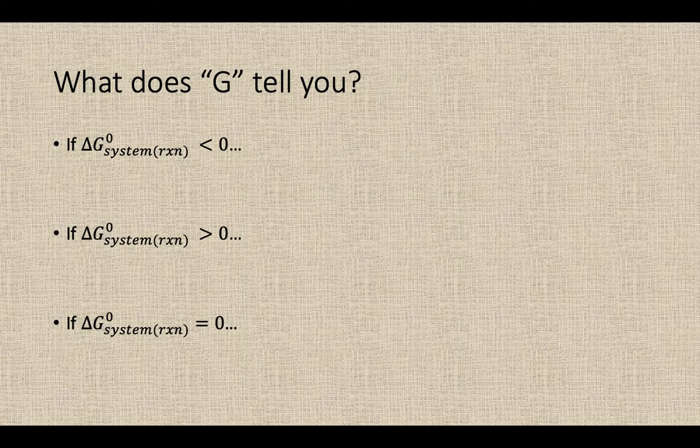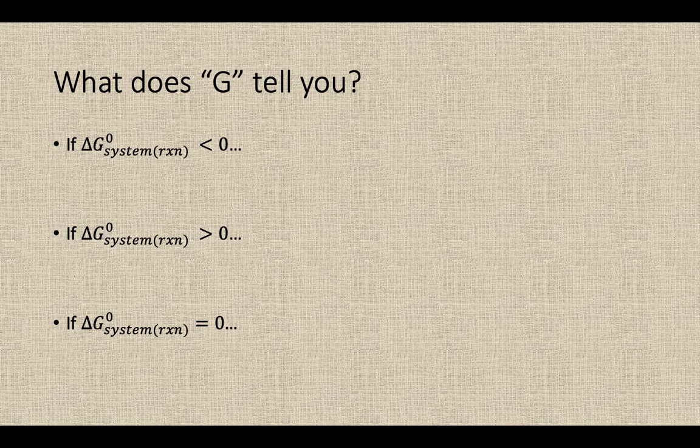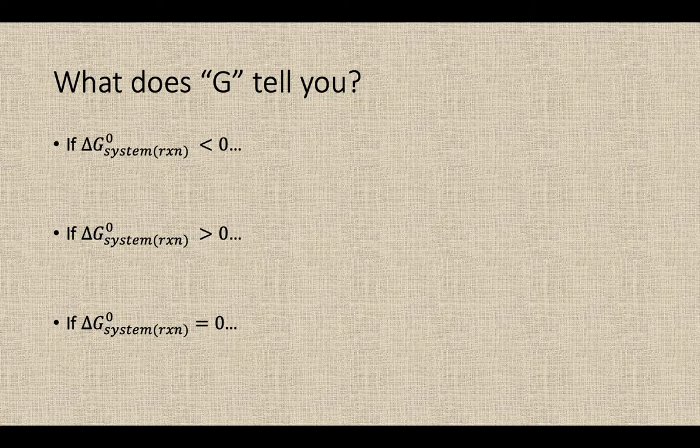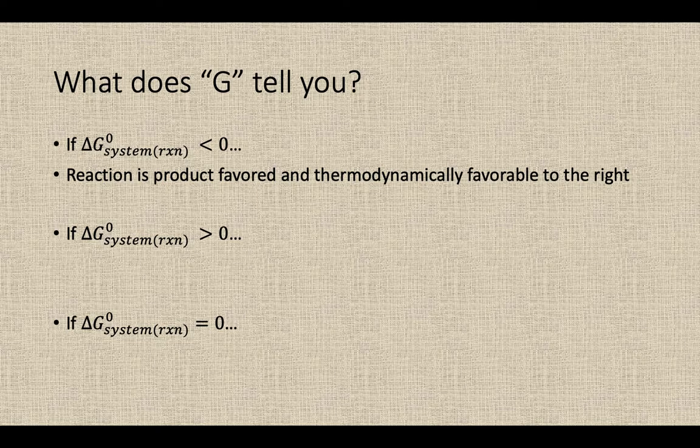So what does the G value tell you? If it's positive, negative, equal to zero, what information does that tell us? If you were to calculate delta G of a reaction by doing delta H minus T delta S, and you ended up getting a negative number, what does that mean? What that means is that the reaction is product favored and thermodynamically favorable to the right. In other words, it's spontaneous to the right. It's going to make products all on its own without any outside assistance from you.